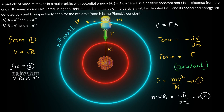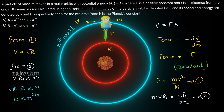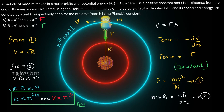From equation 1, since F and m are constants, v²/r is constant, so v is proportional to √r. From equation 2, vr is proportional to n. Substituting v ∝ √r into vr ∝ n gives √r times r ∝ n, or r^(3/2) ∝ n, so R is proportional to n^(2/3). Putting R ∝ n^(2/3) back gives v proportional to n^(1/3).